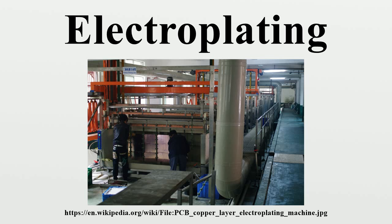Modern electrochemistry was invented by Italian chemist Luigi V. Brugnatelli in 1805. Brugnatelli used his colleague Alessandro Volta's invention of five years earlier, the voltaic pile, to facilitate the first electrodeposition. Brugnatelli's inventions were suppressed by the French Academy of Sciences and did not become used in general industry for the following 30 years. By 1839, scientists in Britain and Russia had independently devised metal deposition processes similar to Brugnatelli's for the copper electroplating of printing press plates.